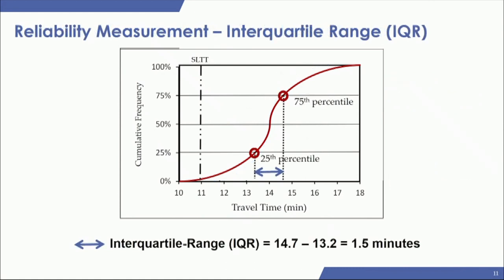You take your 75th percentile and subtract your 25th percentile to get your IQR value. You want to minimize this number — a small IQR means more reliability. Another way to look at it is the slope of the curve from the 25th to the 75th percentile: a steeper slope means a smaller IQR, which means greater reliability.